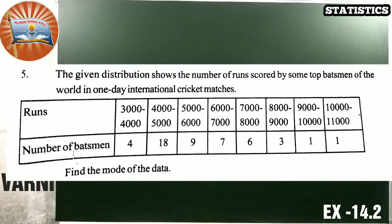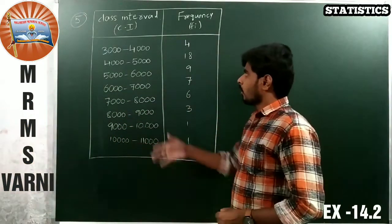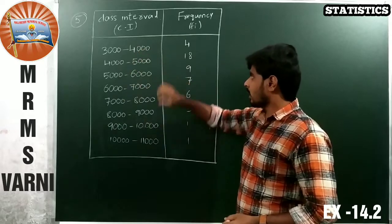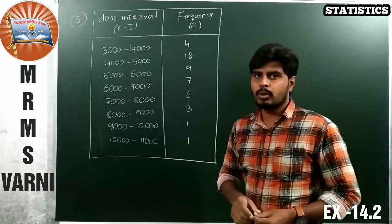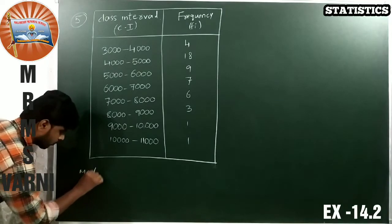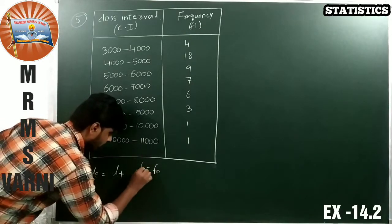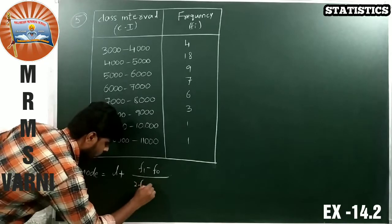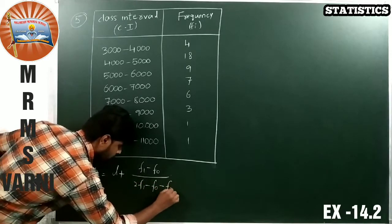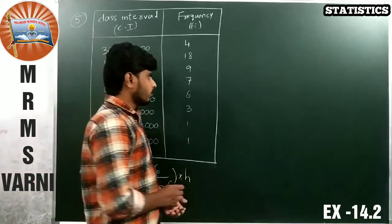So we have to find the mode of the given data here. Now this is the given data. Class intervals are these and these are frequencies. So with this given data we have to find the mode. What is the mode formula? Mode is equal to L plus F1 minus F0 by 2F1 minus F0 minus F2 into h, which is the formula.